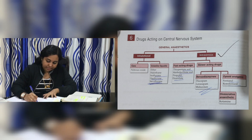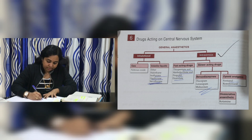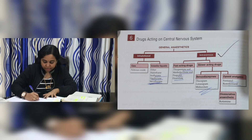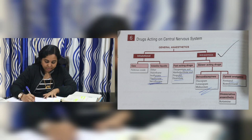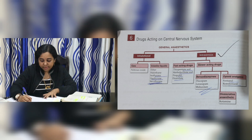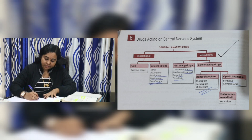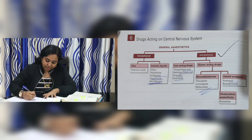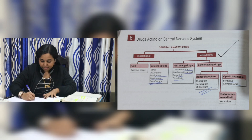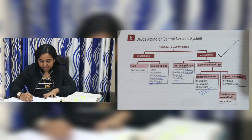General Anesthetics has two classifications: Inhalational Anesthetics and Intravenous Anesthetics. Inhalational Anesthetics are divided into two groups: gases and volatile liquids.